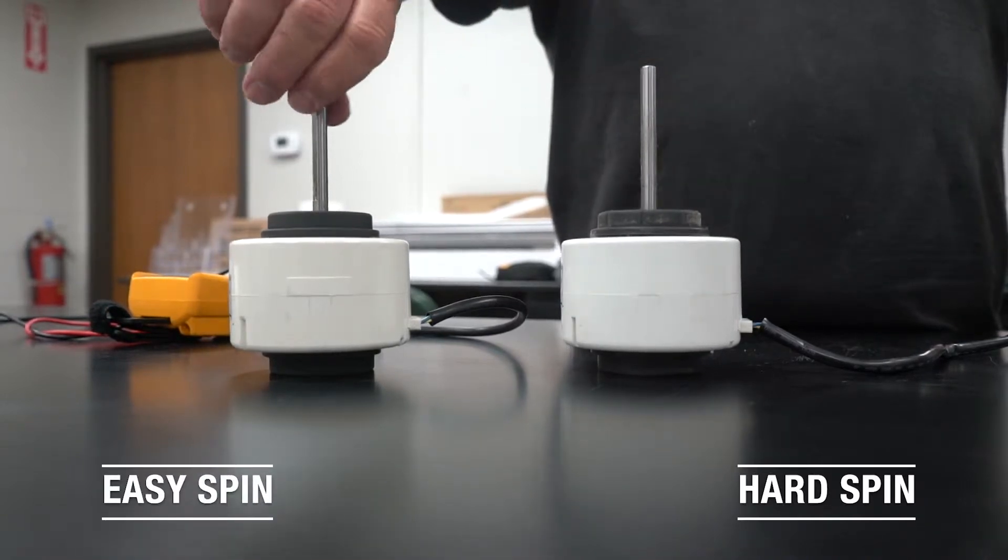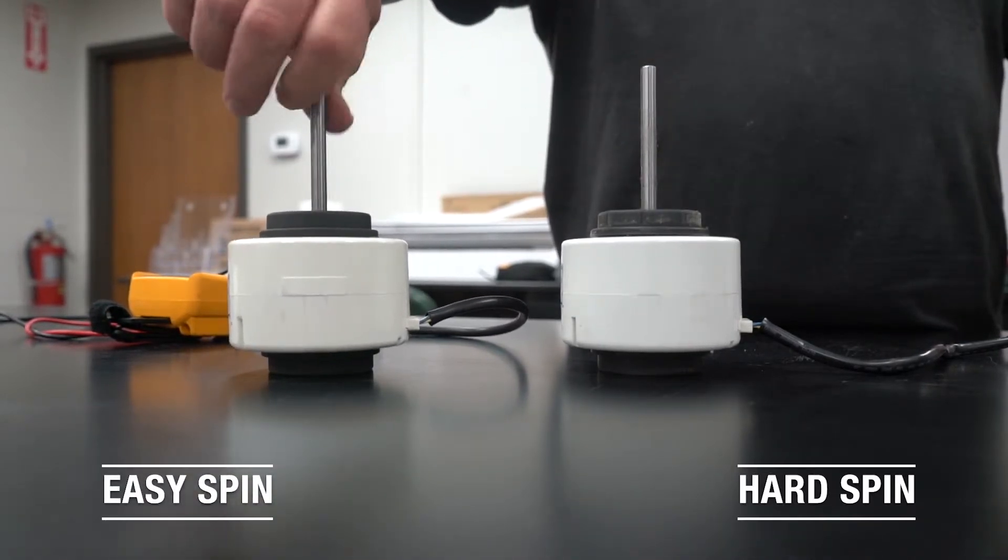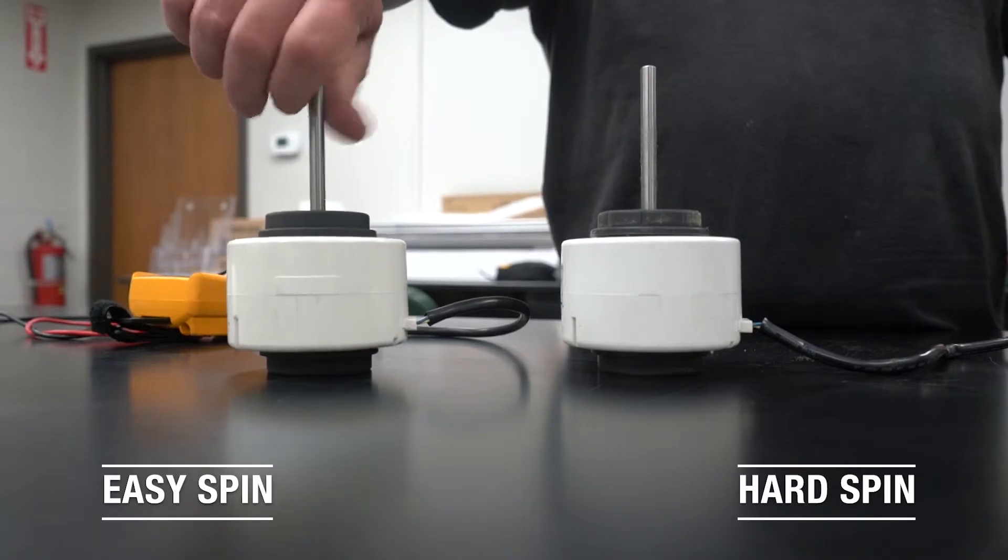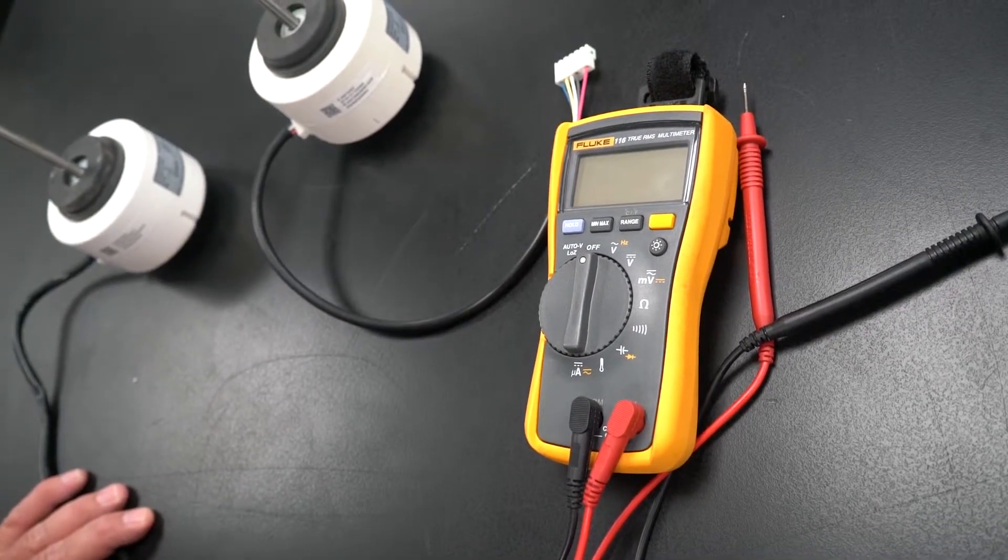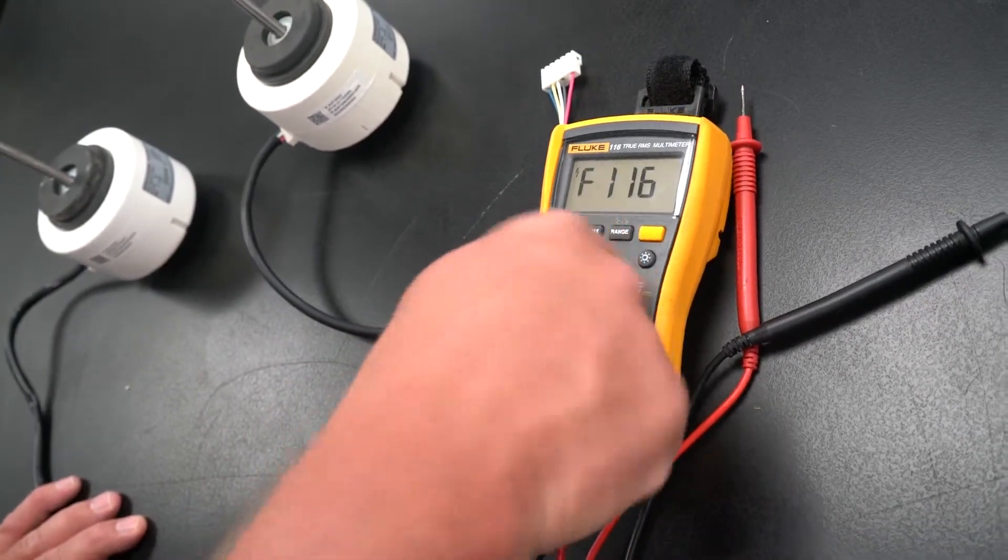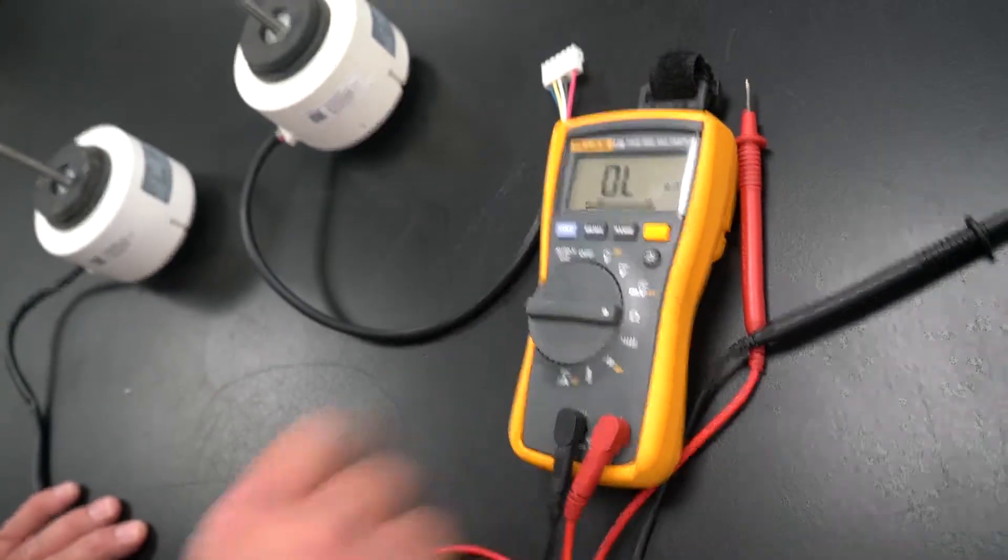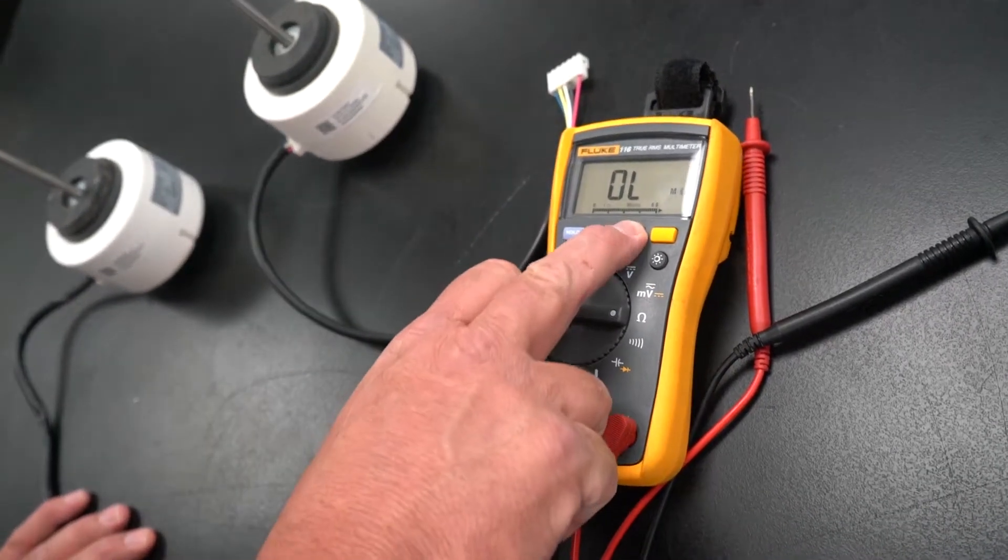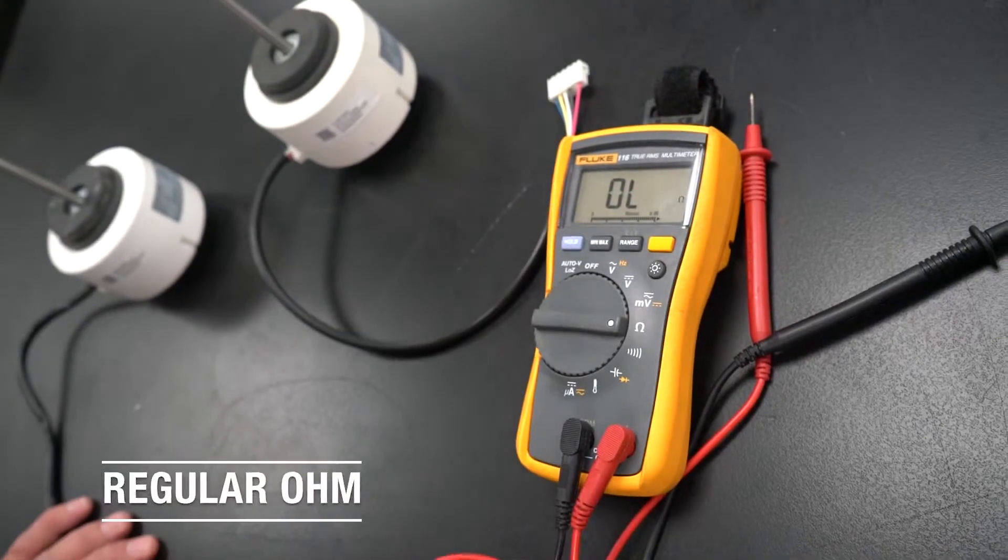Now we are also going to check ohm readings on the motor to see if there is any resistance. We are going to use a multimeter and we are going to put it on the ohms portion of the meter. You want to make the range into just ohms, not mega or kilo ohms.